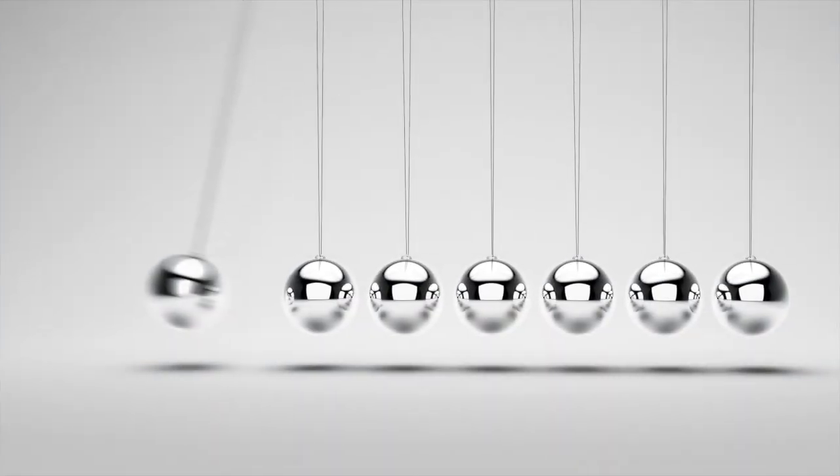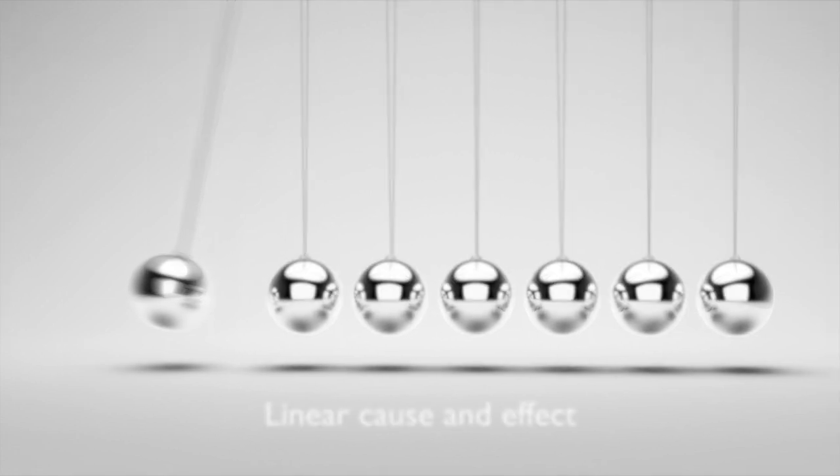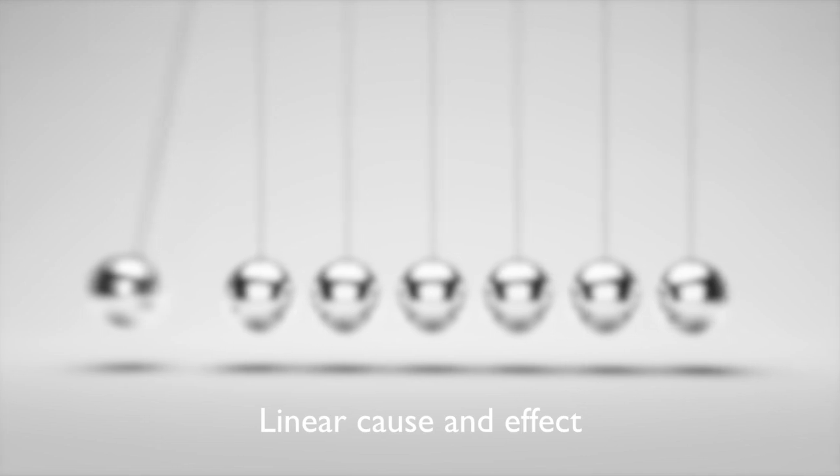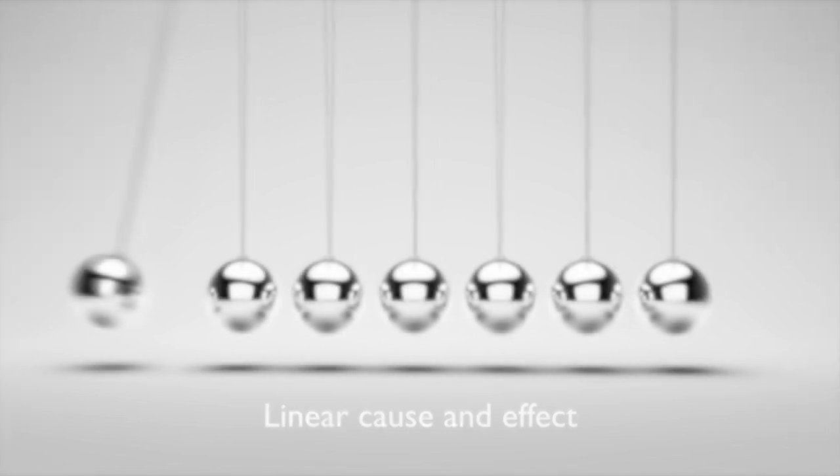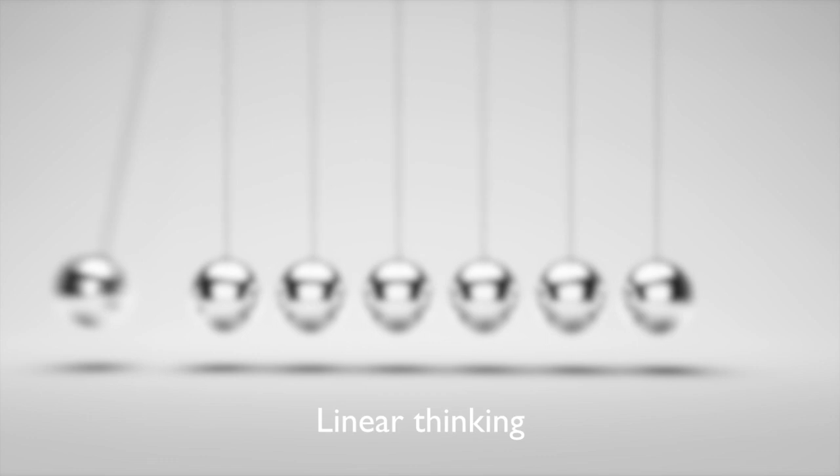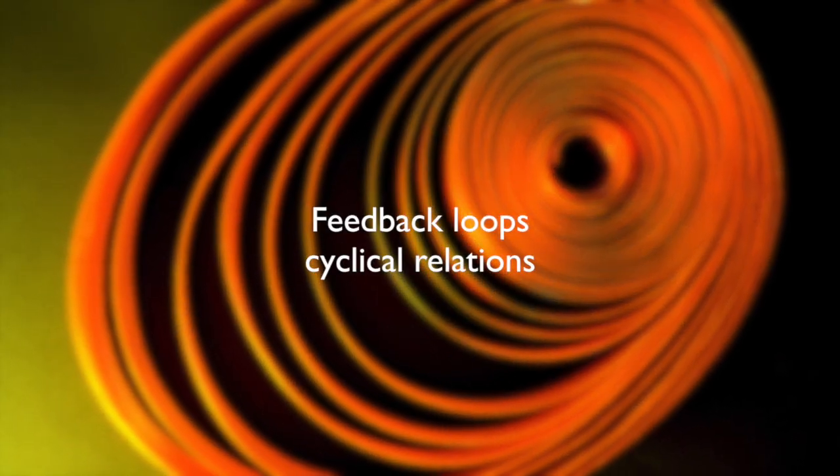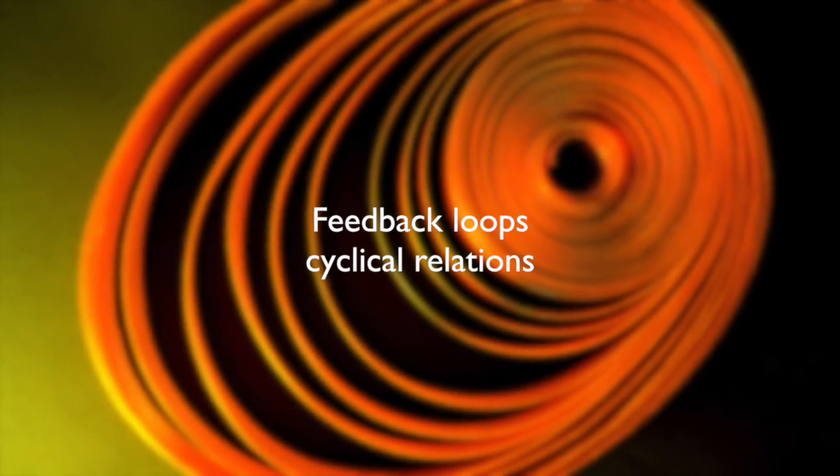Thirdly, are we dealing with a linear system, or are there feedback loops? Analytical thinking searches for direct linear relations between the cause of an event and the effect, thus we call this linear thinking. Systems thinking is more inclined to see events as the product of complex interacting parts and groups where relations are often cyclical with feedback loops.